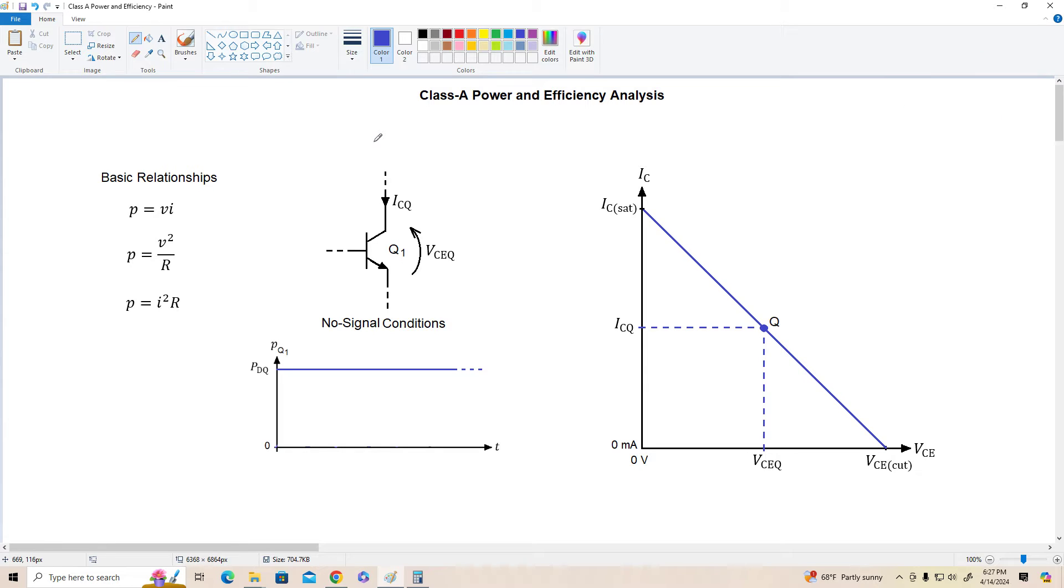Amplifiers are classified by where the Q point is located for the transistor or transistors in the circuit. We're going to be examining class A amplifier power and efficiency today, and although I haven't stated explicitly, all the amplifiers we've been looking at so far have been class A amplifiers.